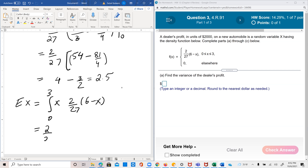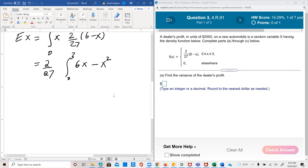Equals 2 over 27 can be pulled out and you first multiply the x, 6x minus x squared. And this is 2 over 27, 6x squared by 2 minus x cubed by 3.